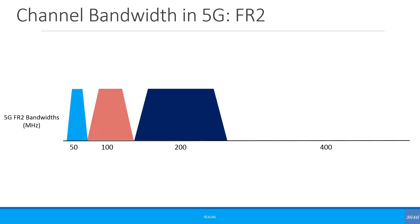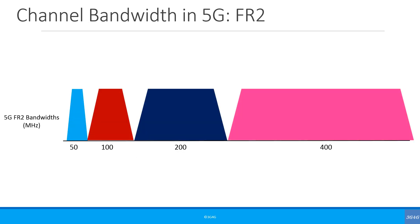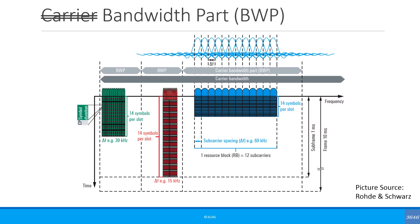The FR2 bandwidths can be seen in the picture here. Let's look at bandwidth part, also referred to as BWP. In earlier versions of 3GPP specs it was called carrier bandwidth part, but 'carrier' has now been removed. As you can see from the picture, the carrier bandwidth has been split into three bandwidth parts. Note that three is just an example — you can have more or fewer bandwidth parts.